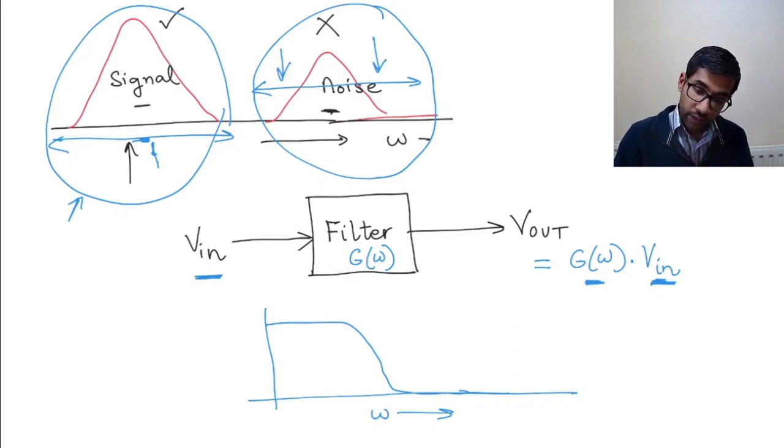Let's say your signal lies in this part of the frequency spectrum and here the gain is quite high so your signal is passed through. And if your noise lies in this part of the frequency band then the noise is almost cut off.